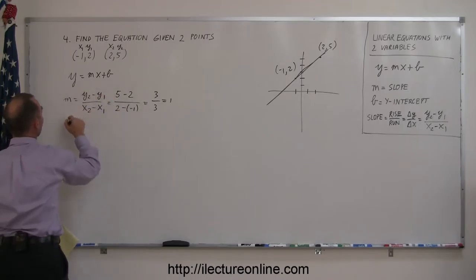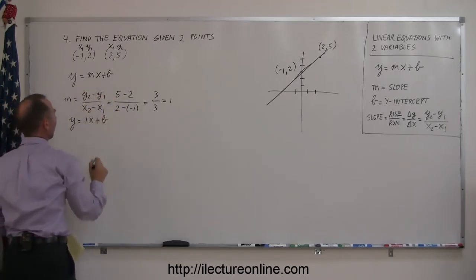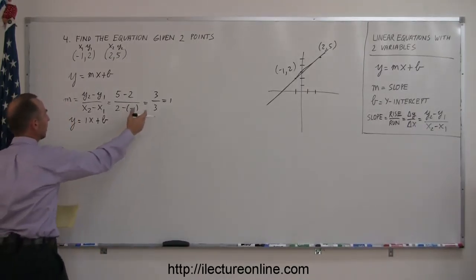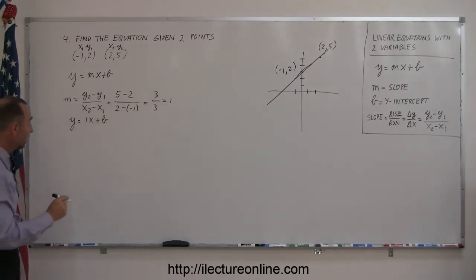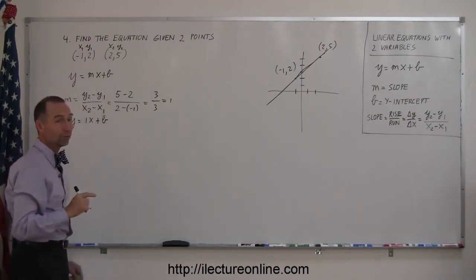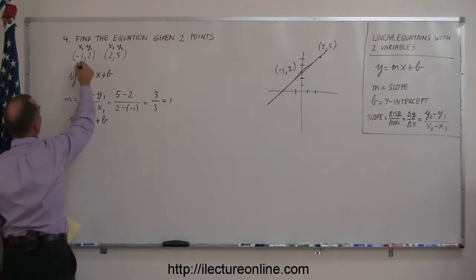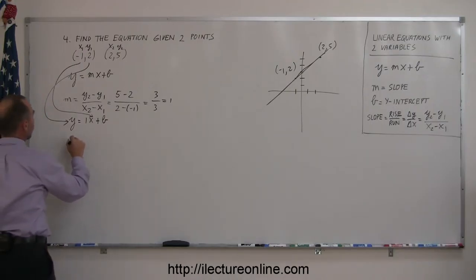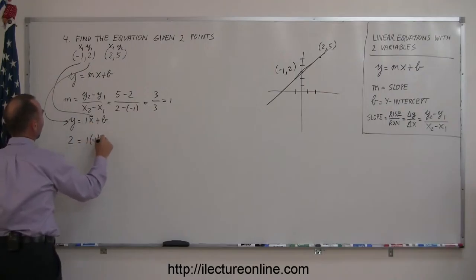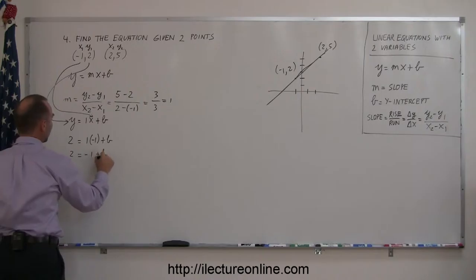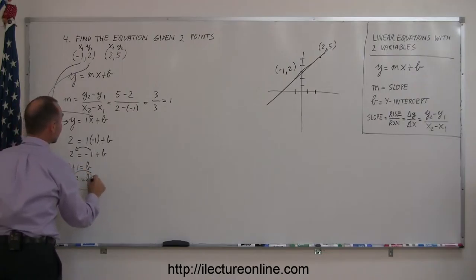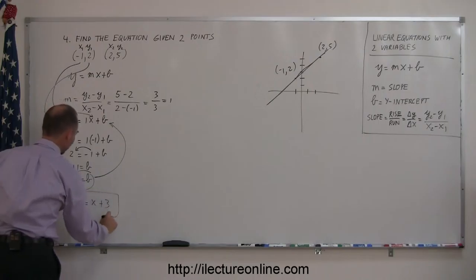Now plug that into the equation and write y equals x plus b. Next, find the intercept. Take a point—you're given two, you can plug in either one. Let's take the first point. Substituting those numbers, we get 2 equals 1 times negative 1 plus b, so 2 equals negative 1 plus b. Moving the negative 1 to the other side, 2 plus 1 equals b, or 3 equals b. Plug that back into the equation: y equals x plus 3. That's the equation of the line.